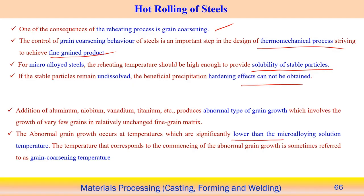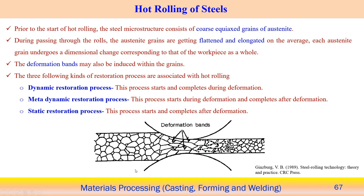This abnormal grain growth is one problem associated with this process. Abnormal grain growth occurs at temperatures significantly lower than the micro-alloy solution temperature. The temperature corresponding to the start of abnormal grain growth is sometimes referred to as the grain coarsening temperature. When we observe abnormal grain growth, the temperature at which it occurs is considered the grain coarsening temperature — these are the typical metallurgical aspects.